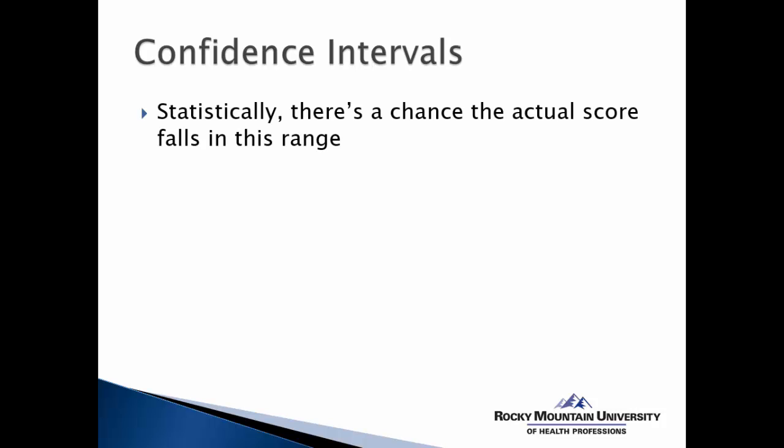So another way to say this, statistically there is a chance the actual score falls in this range. And depending on what type of confidence interval you are using, 90% versus 95%, you can tell them the chance the actual score falls in this range. This represents where the actual answer conceivably could be. So again, we are conveying the idea that we are not exactly sure what the population mean might be, but it is probably somewhere in this range.